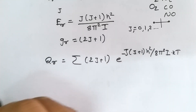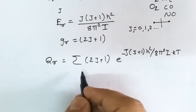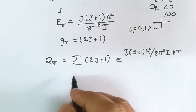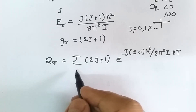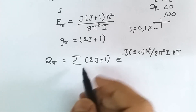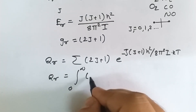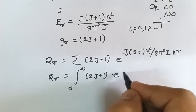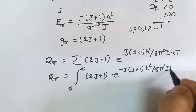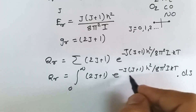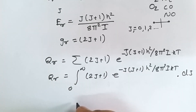Since all the energy levels are very closely spaced, we can treat the summation as continuous and convert it into an integration. Hence, qr becomes an integral from 0 to infinity of (2j+1) × e raised to minus j(j+1)h²/(8π²IkT) dj, where the variable is j (the rotational quantum number states).